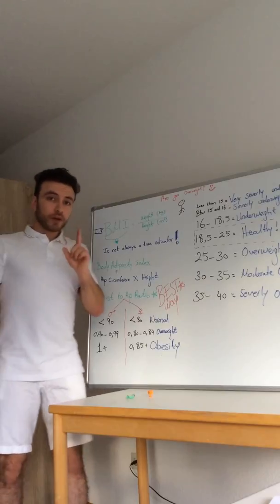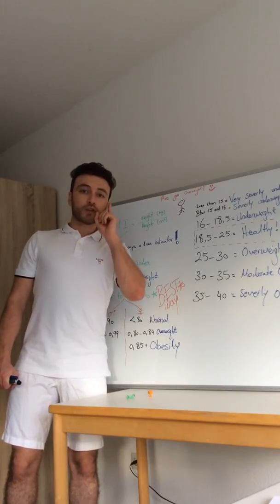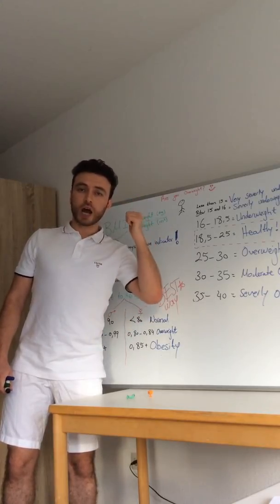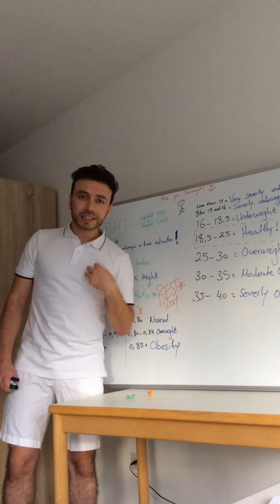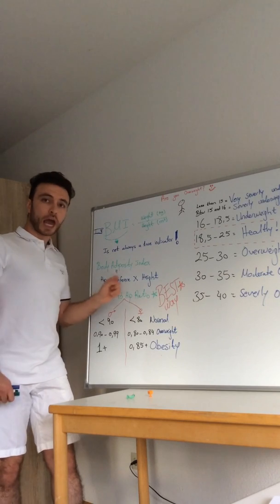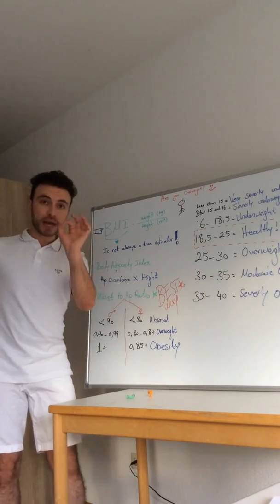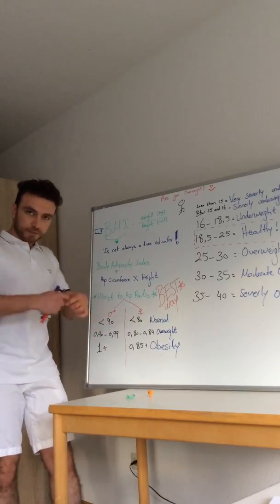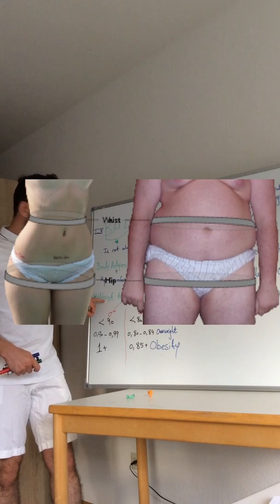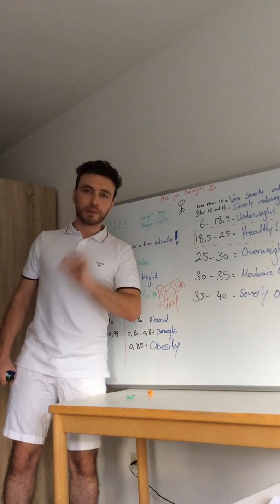But the best way that I recommend to everyone to calculate it and to know your risk for diabetes, for hypertension, for heart attack, for stroke, for any other complications — use the waist-to-hip ratio. If you have a tape measure, calculate your waist circumference and your hip circumference, and then calculate the ratio between them.